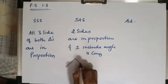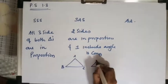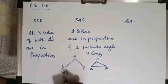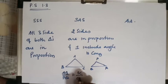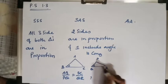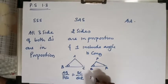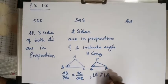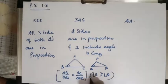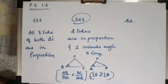For example, with triangles ABC and PQR: if AB upon PQ equals BC upon QR, and angle B is congruent to angle Q — because angle B is the included angle between AB and BC — then if two sides are in proportion and the one included angle is congruent, the triangles are similar by the SAS test of similarity.